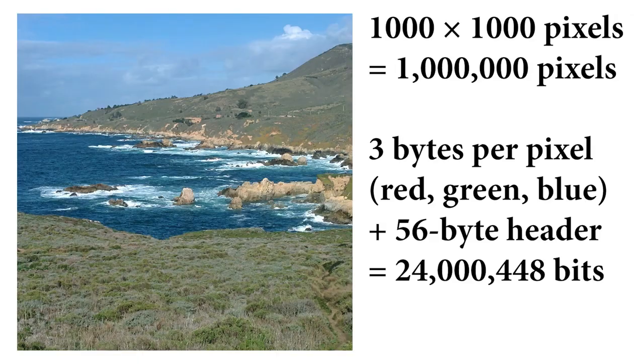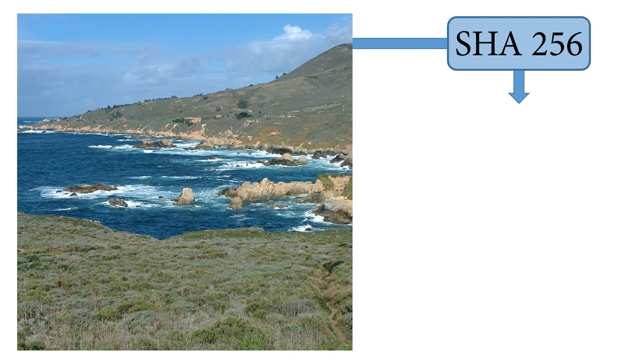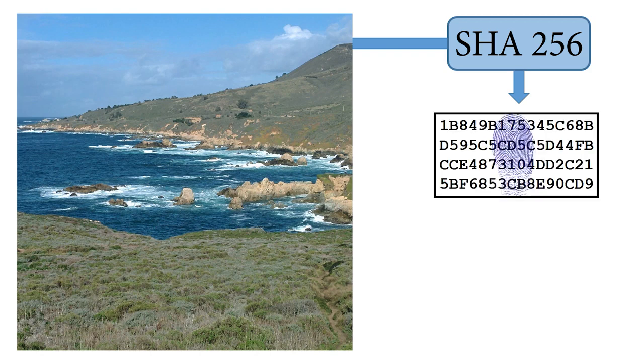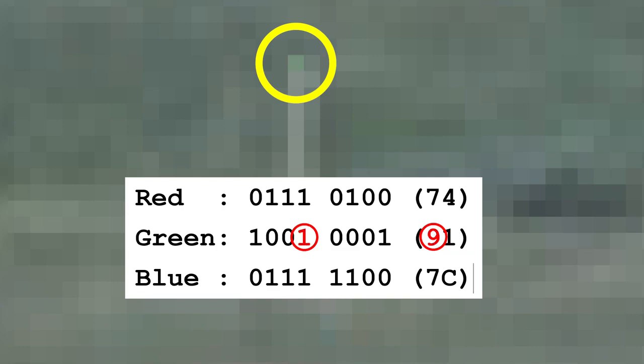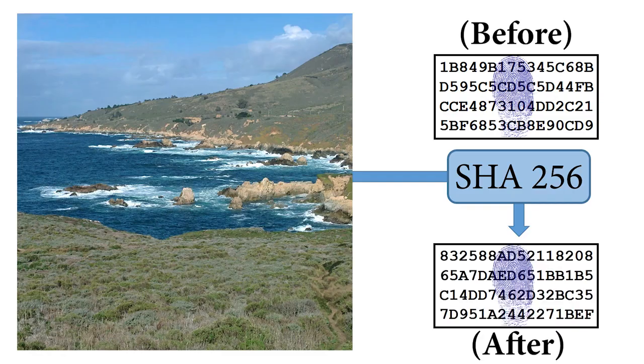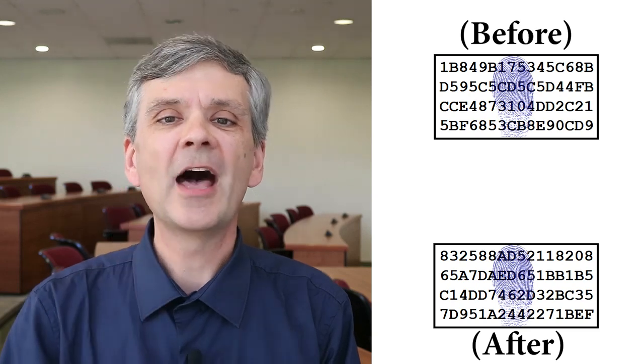Another interesting property of this function is that it's designed to have the butterfly effect built in, such that changing the input just a little bit completely changes the output. Let me show you an example. Here's a picture I took — it's 1,000 by 1,000 pixels and the file is 24 million bits long. When I run this through the SHA-256 algorithm, it outputs this hash. Now watch what happens when I change one single bit in the input. I'm going to zoom in to this pixel on the telephone pole and change the green value by changing this 0 to a 1. Now I rerun the algorithm and I get a completely different output — and that's from changing just one single bit out of more than 24 million bits.